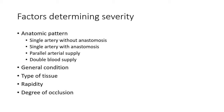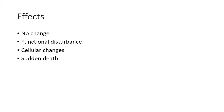The ill effects also depend upon the rapidity of development of ischemia. If ischemia develops suddenly, the ill effects are more pronounced, because the body needs time to adjust — most tissues have the capacity to develop collateral circulation and adapt. But if ischemia develops rapidly, collateral circulation cannot develop and ill effects are more severe.